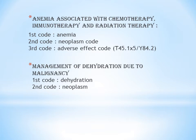When anemia occurs as an adverse effect of chemo, radiation, or immunotherapy, the first code should be the code for anemia. If anemia occurs as an adverse effect of chemotherapy, your first code should be anemia due to antineoplastic chemotherapy. The second code should be the neoplasm code, and the third code should be the adverse effect code — T45.1x5 for chemo or immunotherapy, or Y84.2 for radiation therapy.